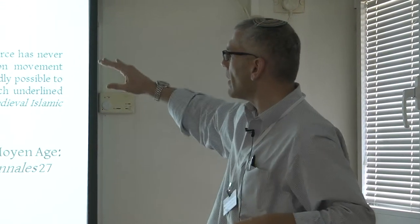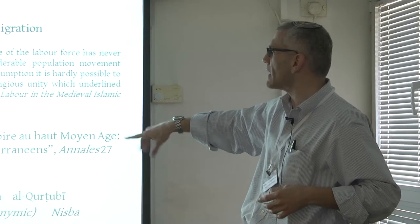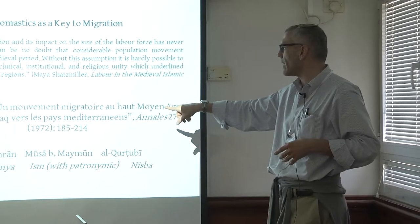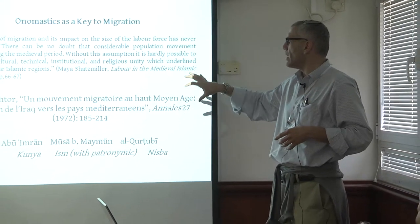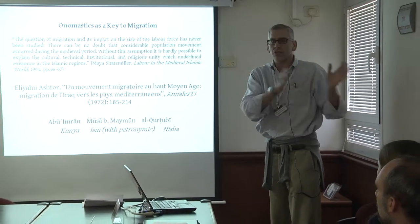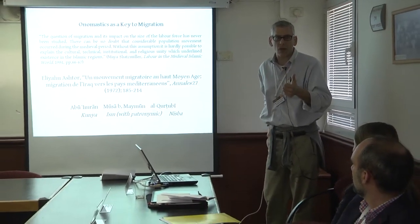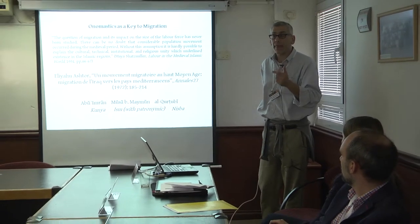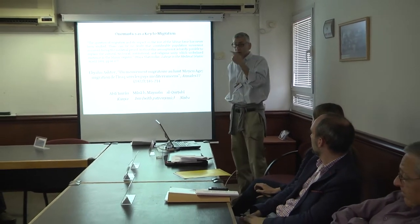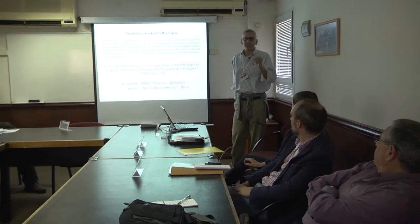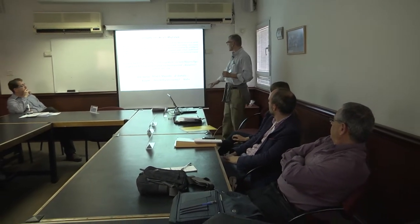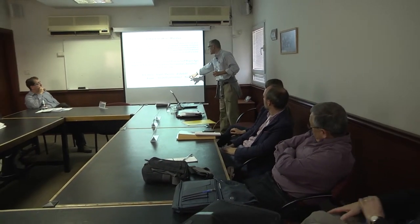Schatzmiller cites extensively Eliyahu Ashtore's article from 1972, in which he discusses a migration from east to west, looking at Islamic chronicles and some Geniza documents for the onomastic data that can be gathered there, particularly concerning the Nisbah.